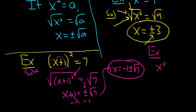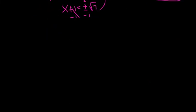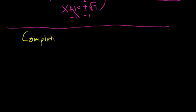One more: if x squared equals 4, when you take the square root you get x equals plus or minus 2 every single time. Now we can talk about the harder method — completing the square. This is probably one of the hardest ways people have to learn when dealing with quadratic equations.